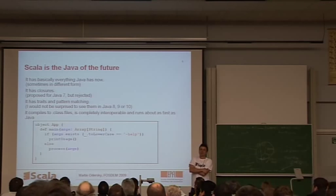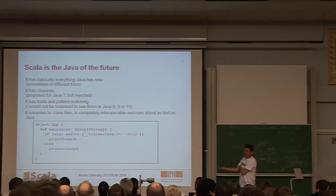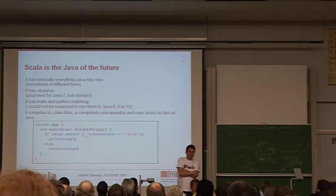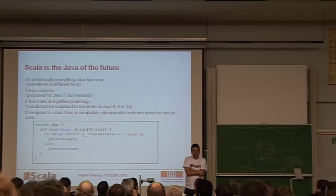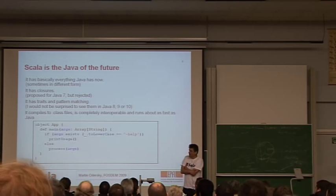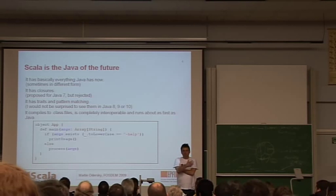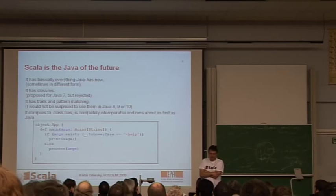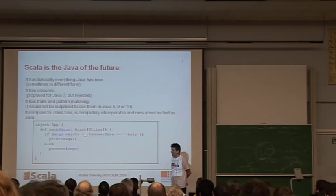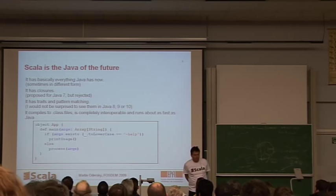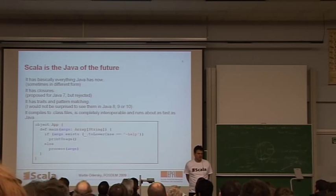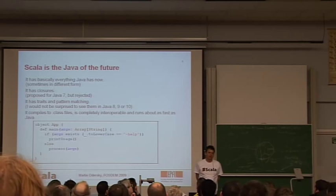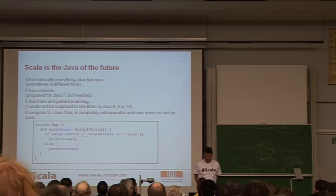Another way to look at Scala is to say, well, it's the Java of the future. It has basically everything Java has now, sometimes in a slightly different form, but it's there. It has closures, which have been proposed by many for Java 7, but in the end rejected for Java 7. It has things called traits and pattern matching. I'll tell you a little bit about that later. And I wouldn't be surprised to see these features in Java 8, 9, or 10. It compiles to .class files, just like Java does. It's completely interoperable, and it's about as fast as Java. So if you switch from Java to Scala in your application, typically you won't see any difference in execution speed.